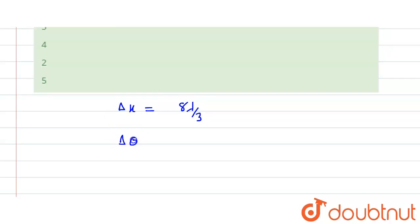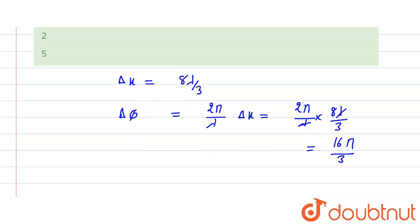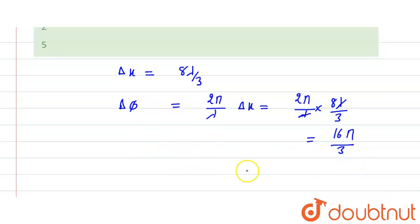So here we can find delta x is given as 8λ/3. Now find phase difference. This phase difference is equal to 2π/λ into delta x. So that means this is 2π/λ into 8λ/3, and lambda to lambda cancel. So here it is equal to 16π/3.